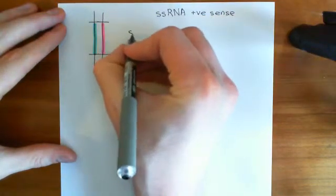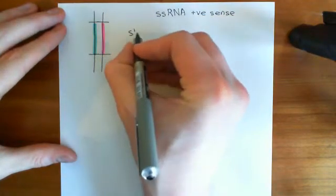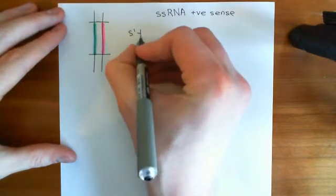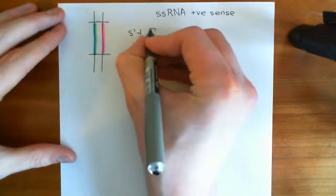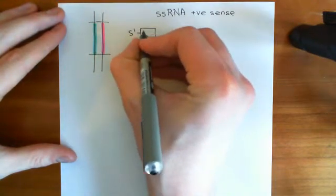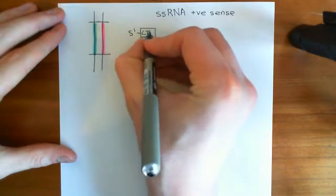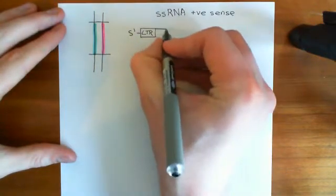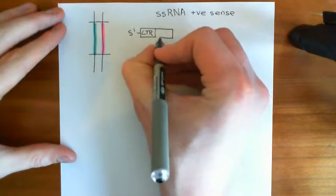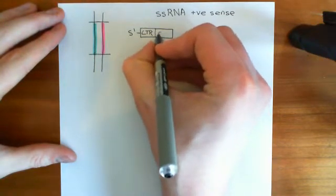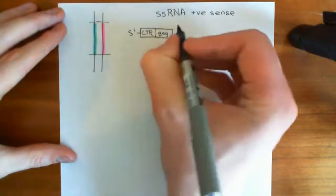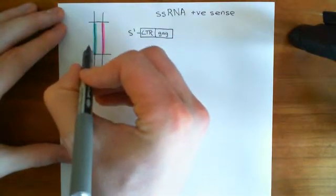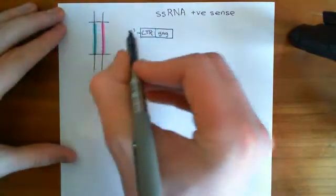We started off with the 5' end of the RNA here, and right at the end we have this long terminal repeat region, the LTR portion. Then we have the gene GAG. There's a good reason why I'm drawing this out again, because we need to understand something about the DNA — the DNA is going to be backwards, basically.